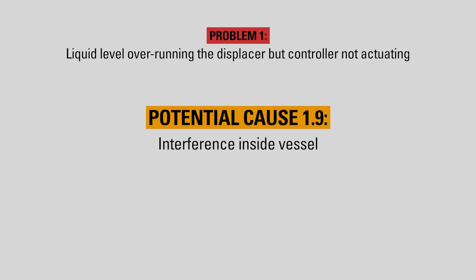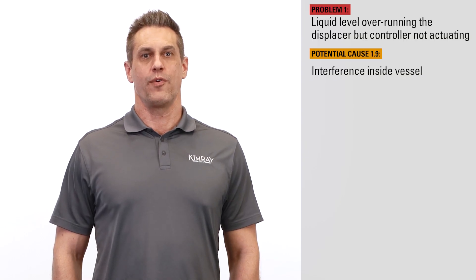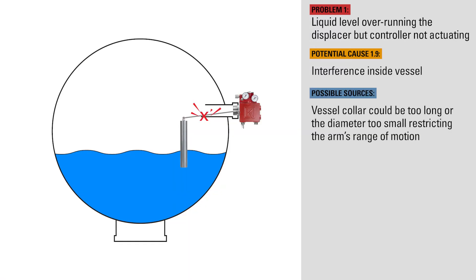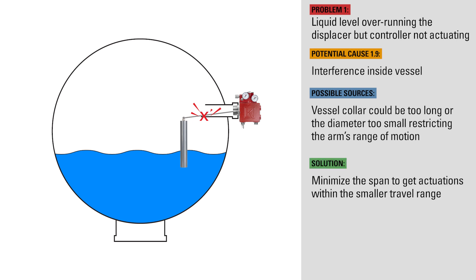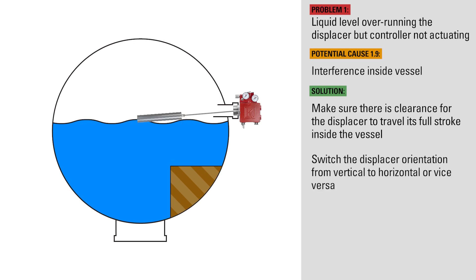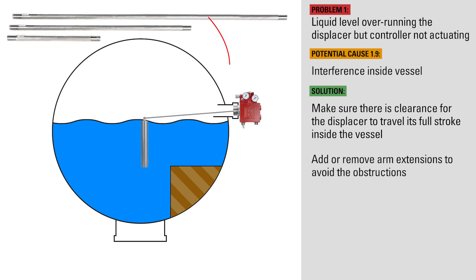If there's an obstruction inside the vessel not allowing full range of motion of the arm or displacer, this could prevent the controller from actuating. One possible restriction could be the collar inside the vessel being too long or the diameter too small. If this is the case, you can try minimizing the span to get actuations within the smaller travel range. Make sure there's clearance for the displacer to travel its full stroke inside the vessel. If there isn't, you can try switching the displacer orientation from vertical to horizontal or vice versa, or adding or removing arm extensions to avoid the obstructions.